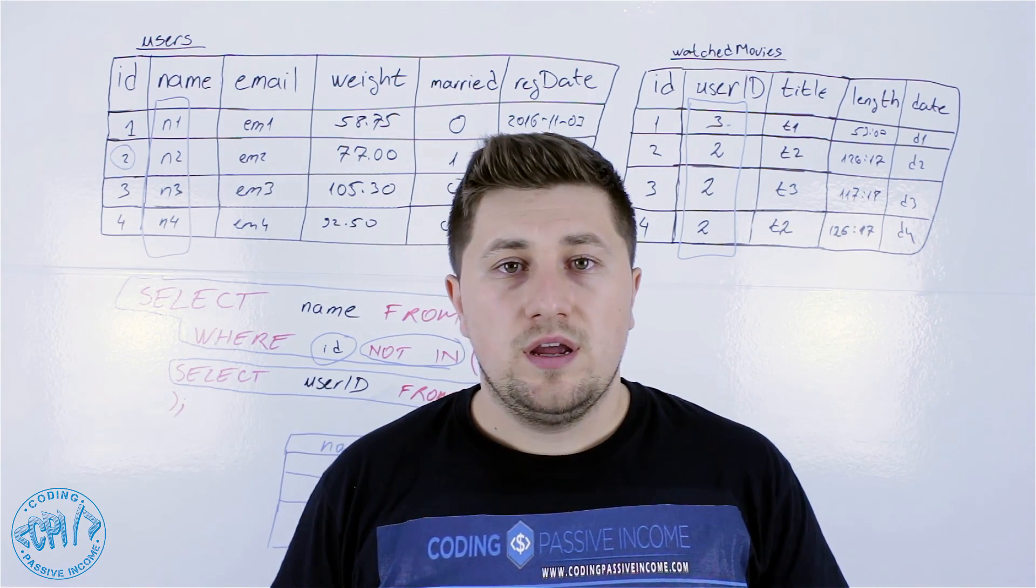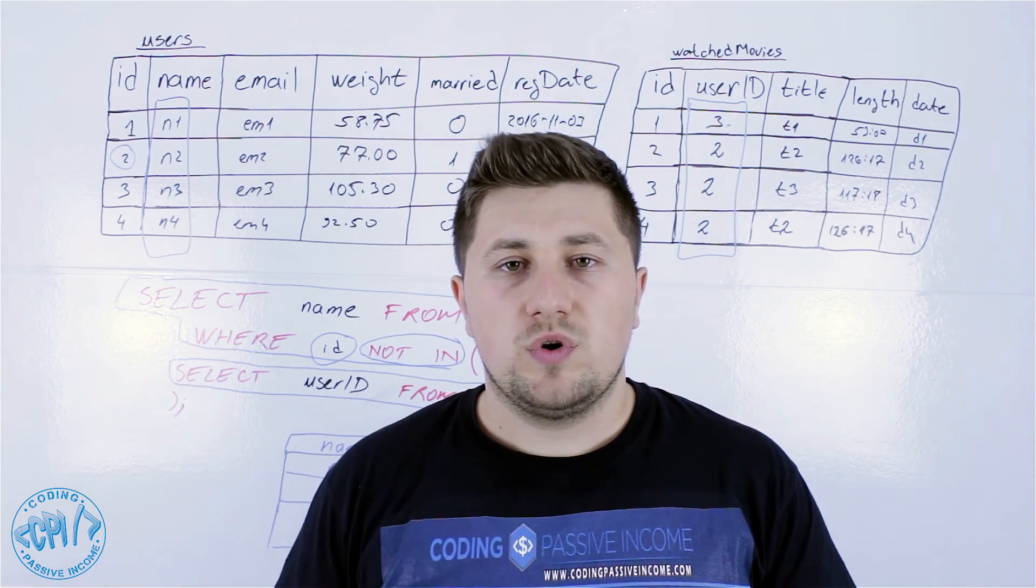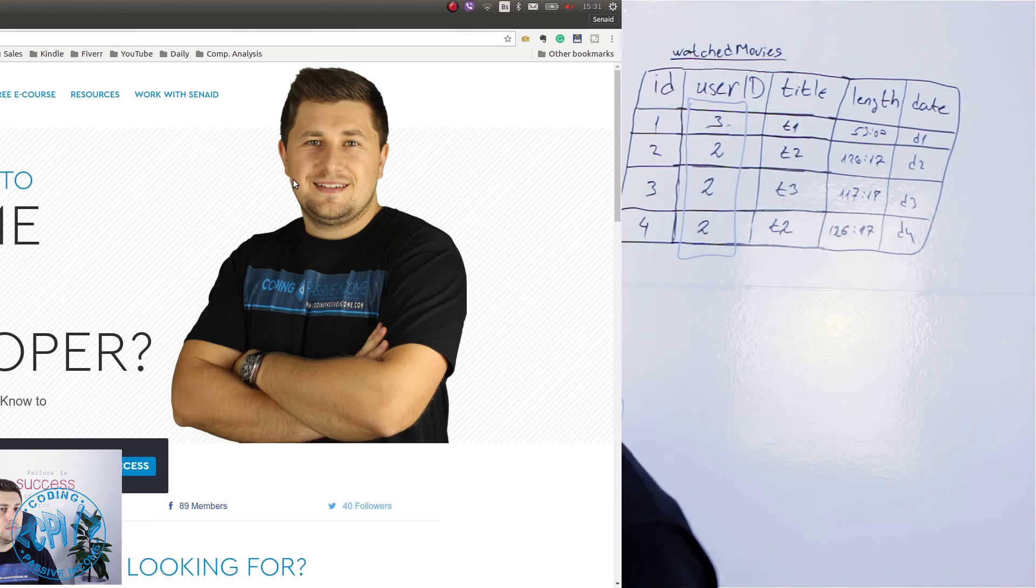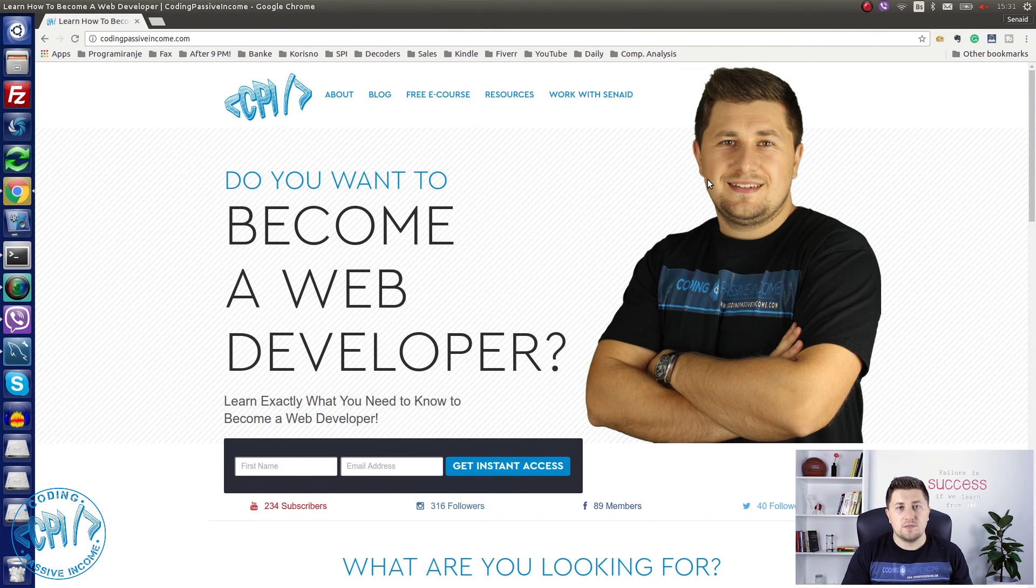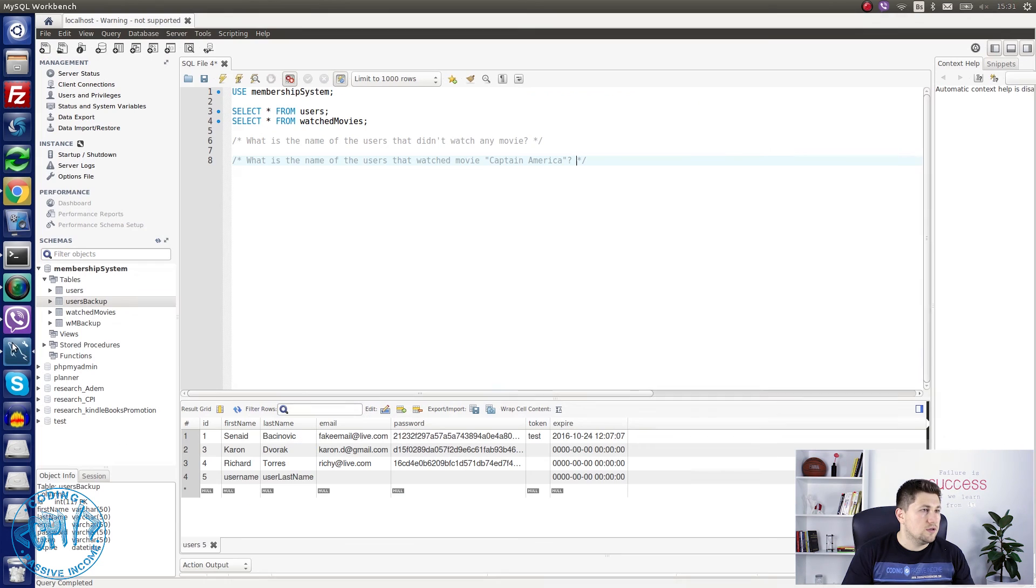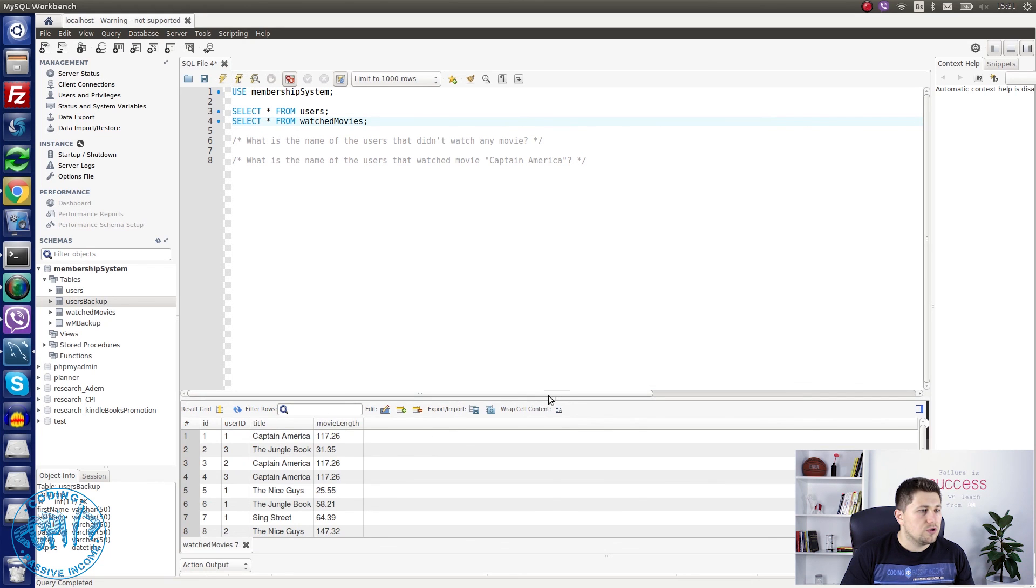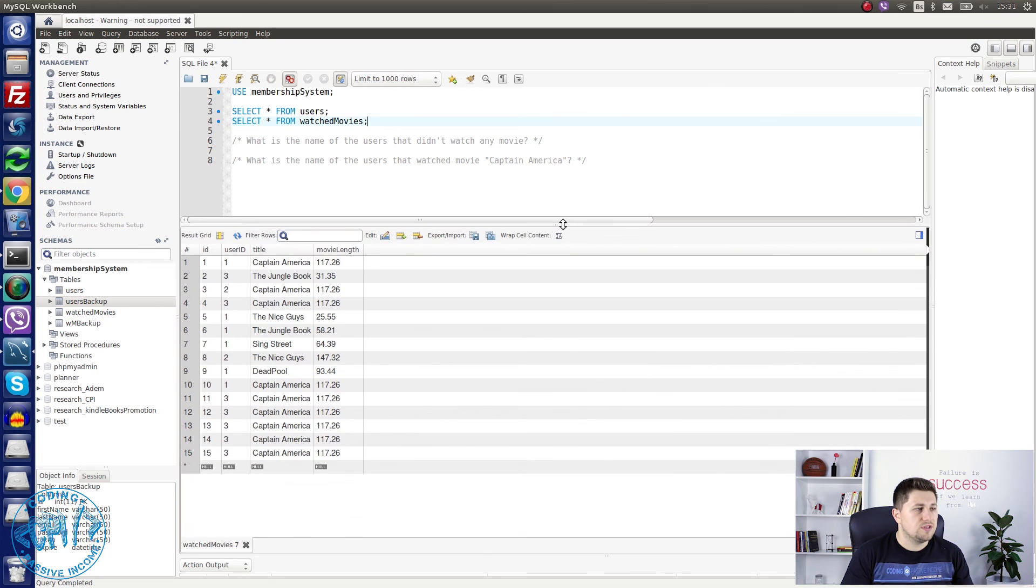Now I will show on my PC a little bit more and give you more examples how to use it. So now I'm here at my PC and I will inside my workbench show you how to use the SQL subquery. As you can see here I have already written some basic commands. First one is to use membership system database, the second one is just to show all the data that we have inside users table. As you can see here I have four users. And the second query is just to show all watched movies and the data that we have inside watched movies table.